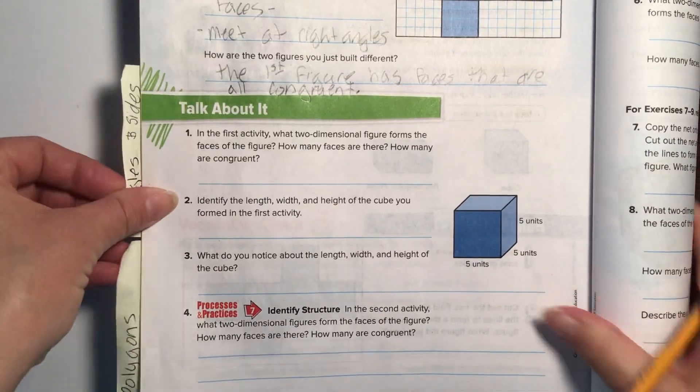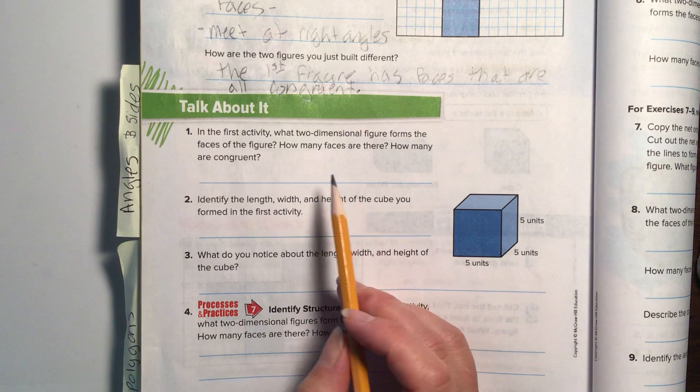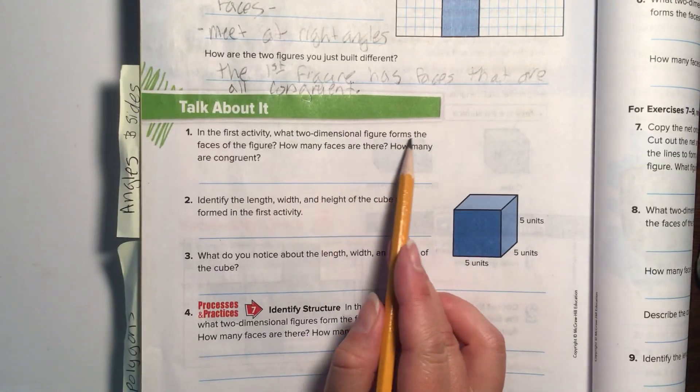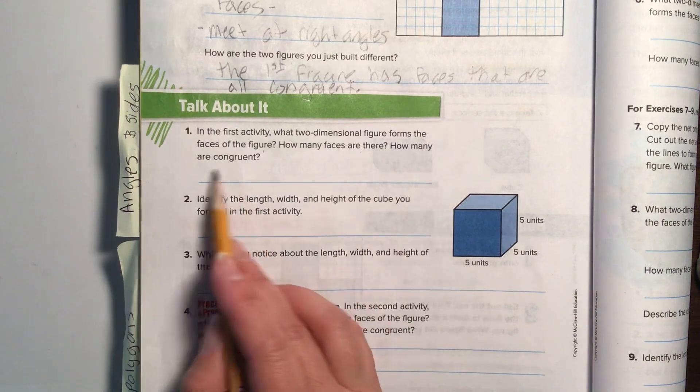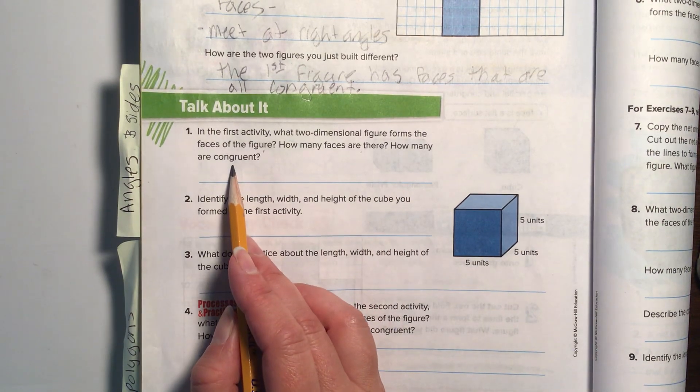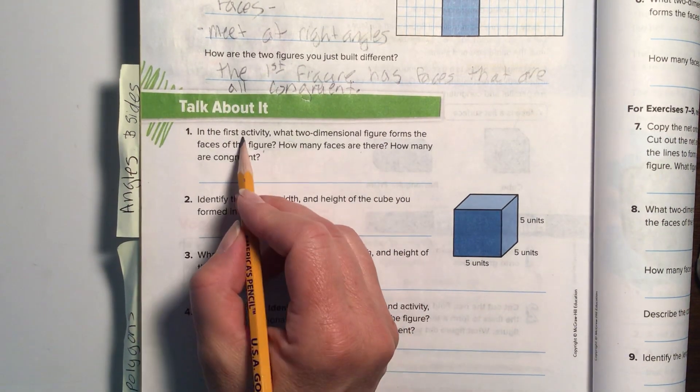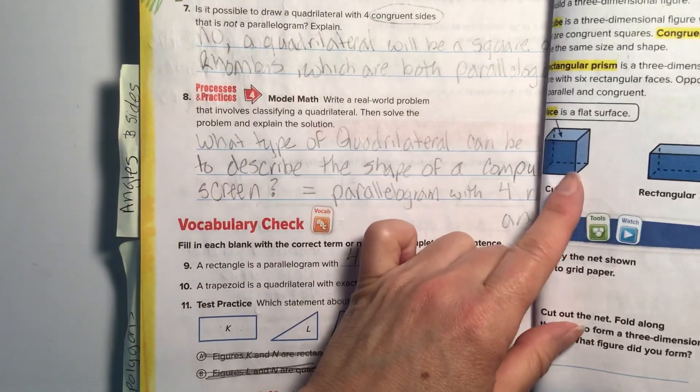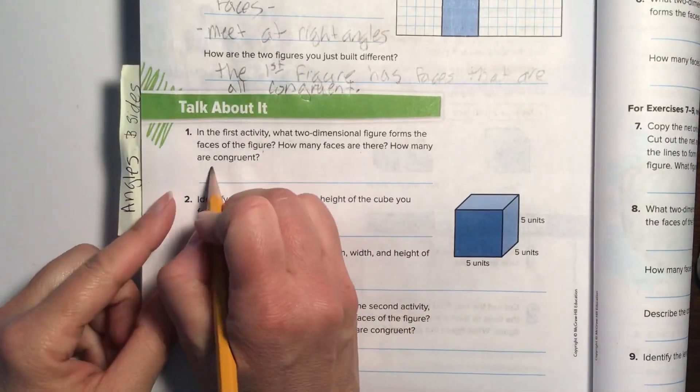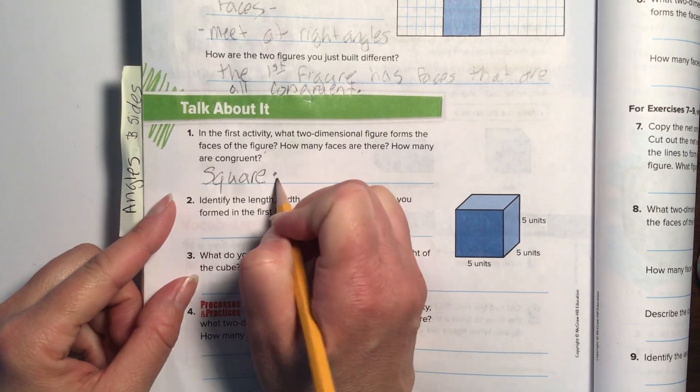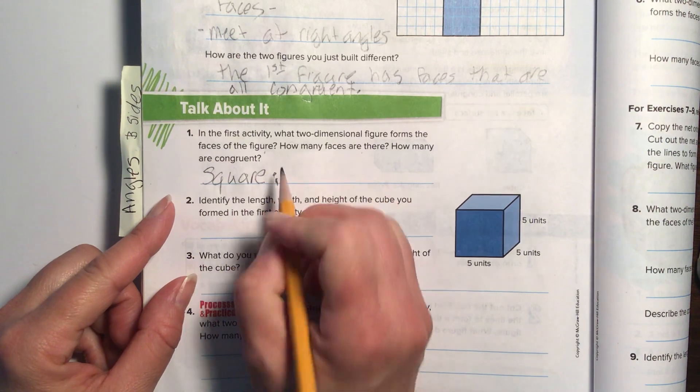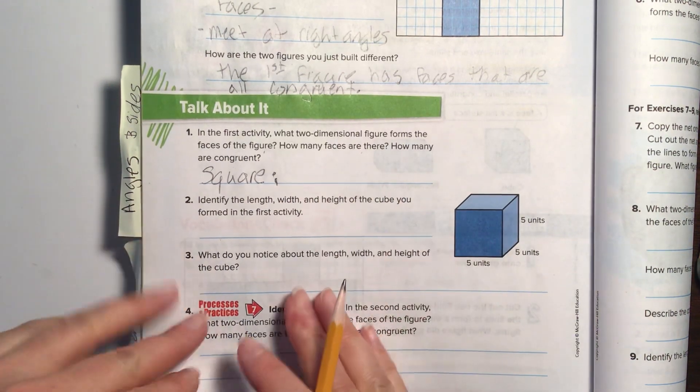Talk about it. In the first activity, what two-dimensional figure forms the faces of the figure? How many faces are there? How many are congruent? There are about three answers here. So the first activity, we built a square. There's our first answer.